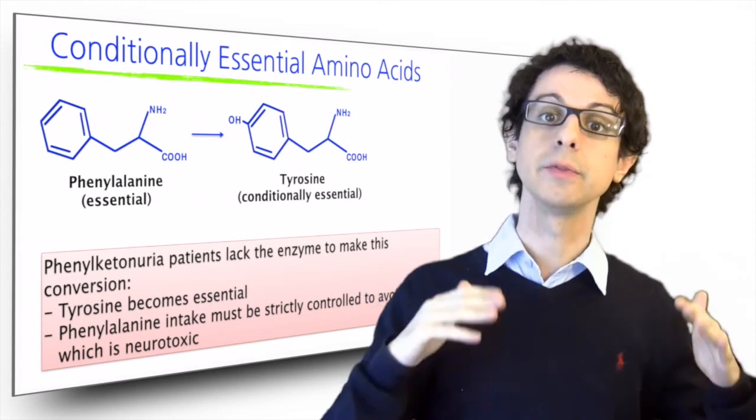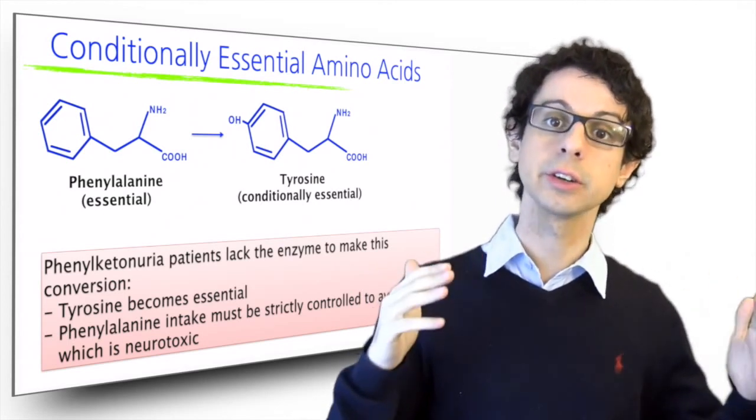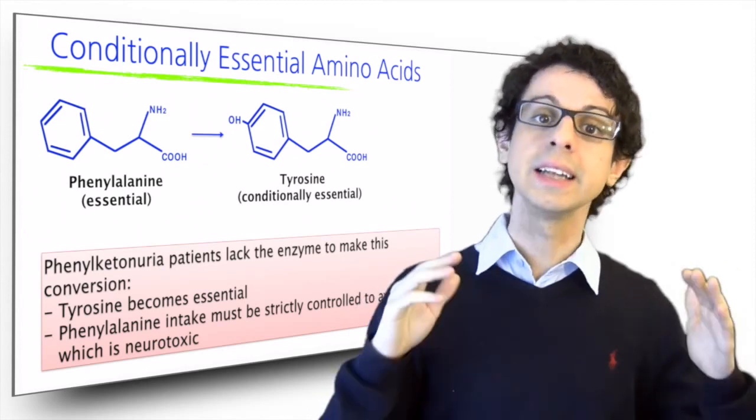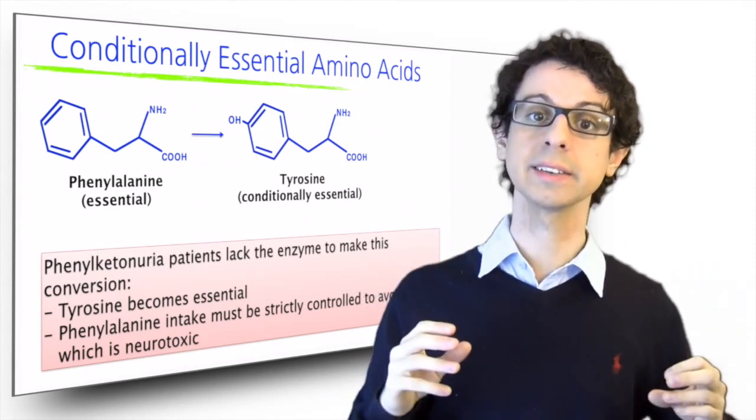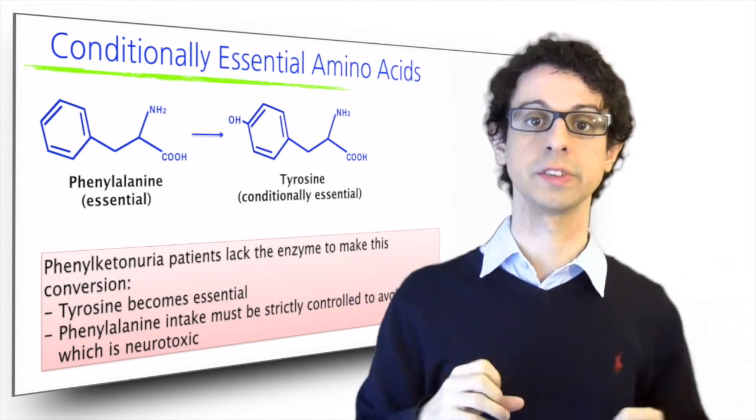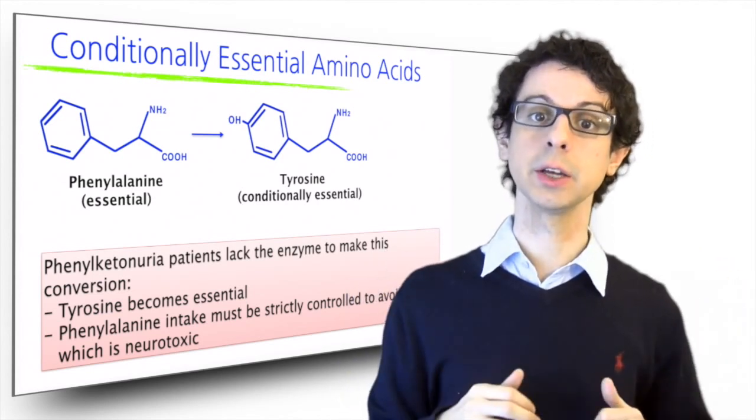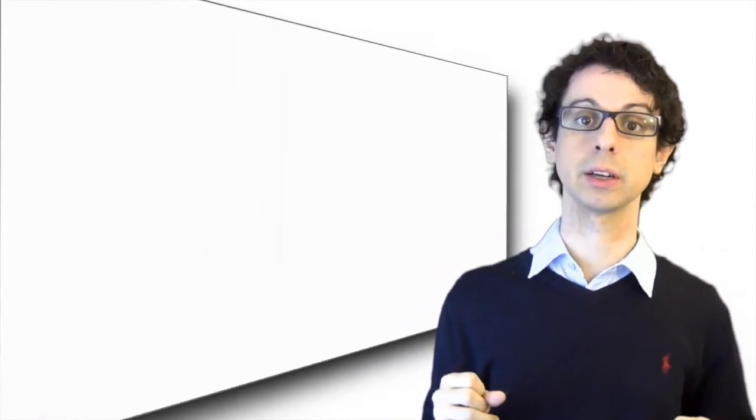Which is the reason why, if you remember when we discussed the alternative sweeteners, whenever a food contains aspartame, it has to carry a warning on its label that it is a source of phenylalanine. Luckily, all newborns are screened for PKU so that their diet can be strictly controlled.